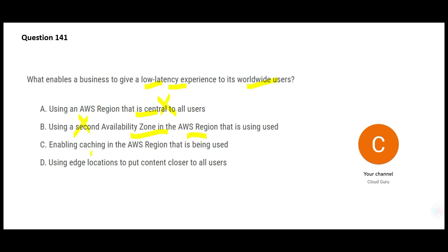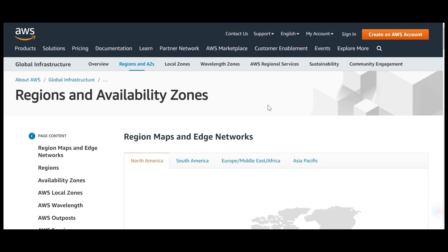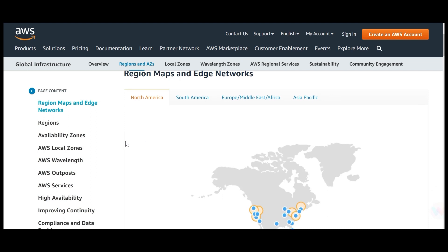Option C talks about enabling caching in the AWS region. Caching does help with low latency, but purely caching alone will not help. If something like CloudFront were mentioned — where distribution is also taken care of in addition to caching — that would be different. But this option is talking purely about caching. Let's look at option D: utilize edge locations and put the content closer to all users.